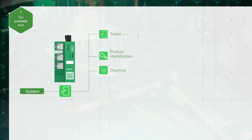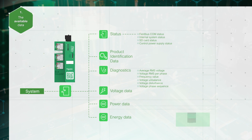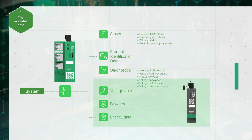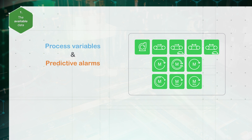Status, identification, and diagnostics data related to the bus coupler and the complete island are provided. If the voltage interface module is present, power and energy data at the island level are available. Application and load avatars introduce process variables and predictive alarms — they contribute to avoiding machine outage.